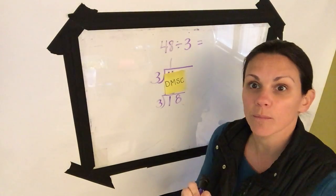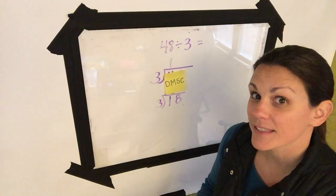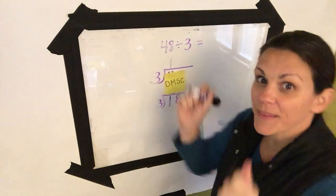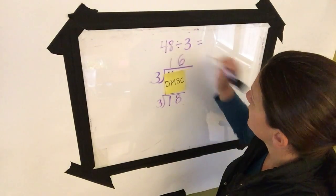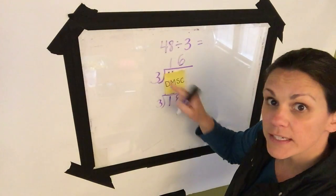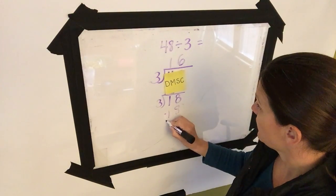18 divided by 3 does have an equal group. 18 divided by 3 is 6. Where does the 6 go? That's right, up on the top because it's dancing. 6 times 3 is 18. We subtract.